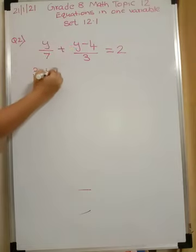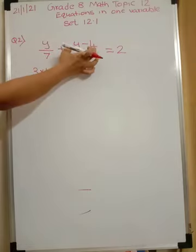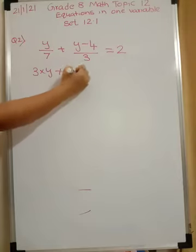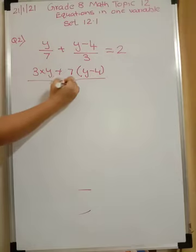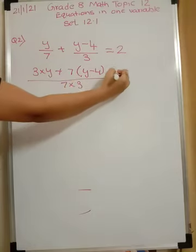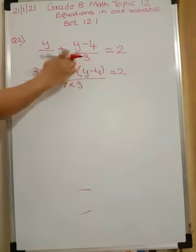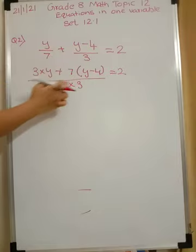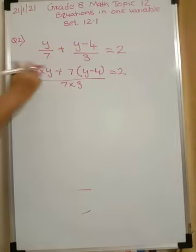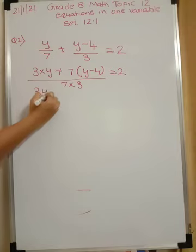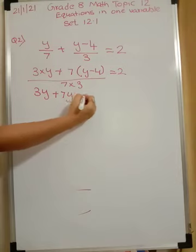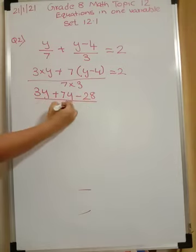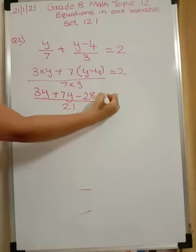So LCM we can say is 23 or you cross multiply. 3 into y plus 7 will be multiplied by both these terms. So plus you can write 7 multiply by y minus 4. The whole upon 7 into 3 is equal to 2. I have multiplied y by 3 and this term by 7. Below you have 7 into 3. Now 3 into y is 3y plus 7 into y is 7y plus 7 into minus 4 is minus 28 upon 7 threes are 21 which is equal to 2.